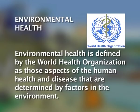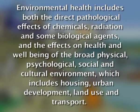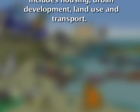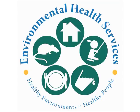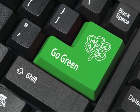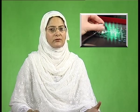Environmental health is defined by the World Health Organization as those aspects of human health and disease that are determined by factors in the environment. It includes both the direct pathological effects of chemicals, radiation and some biological agents, and the effects on health and well-being of the broad physical, psychological, social and cultural environment, which includes housing, urban development, land use and transport. Human health information technology has tremendous application in environmental education and health, and development of internet geographical information systems has generated a wealth of information on various aspects of environment and health.